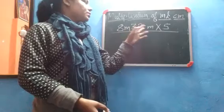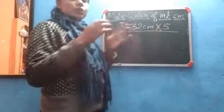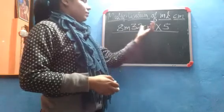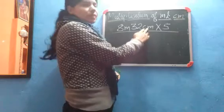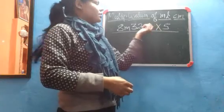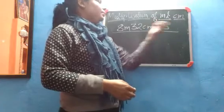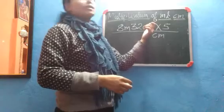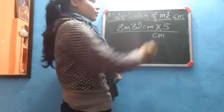8 meter 32 centimeter is multiplied by 5. As you already know, we multiply from the one's place. From the one's place we firstly multiply centimeter, because centimeter is a different unit — this is a unit of length and 5 is a number. So we write centimeter, then we multiply 32 by 5.